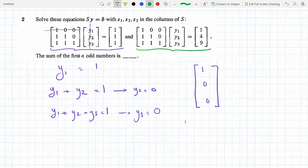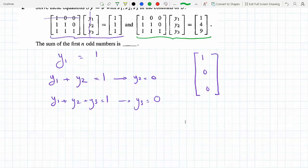If we go to the second one, we're gonna do the same thing. 1 times y1, 0y2, 0y3 equals 1. Now if I do the second equation, I get y1 plus y2 plus 0y3 equals 4. But y1 equals 1, so that means y2 equals 3.